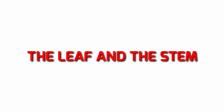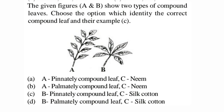The given figures A and B show two types of compound leaves. Choose the option which identifies the correct compound leaf and example. A is a neem leaf which is pinnately compound — correct as given in your NCERT textbook — whereas B is palmately compound, and the example is silk cotton. Both option A and option D are correct with their examples, so we go with both option A and option D.